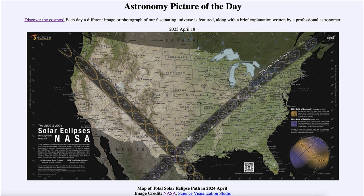Eclipses are not that rare — they do occur every year somewhere on Earth. However, the paths are not very wide for the total solar eclipse. In order to see the sun completely blocked out by the moon, you have to be on that path. If you're in Mississippi, Alabama, or Georgia, you will see only a partial eclipse. Even in a state the path passes through, like Ohio, if you're in the southeastern portion you will only see a partial eclipse — almost total, but not quite. You actually have to be within that narrow range.